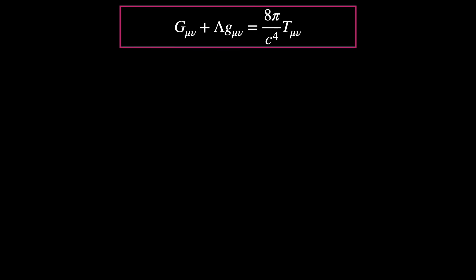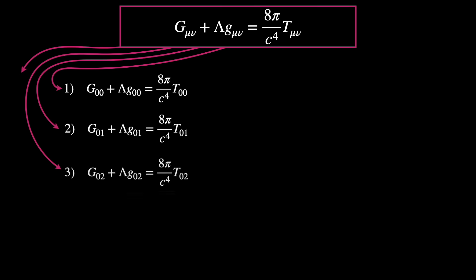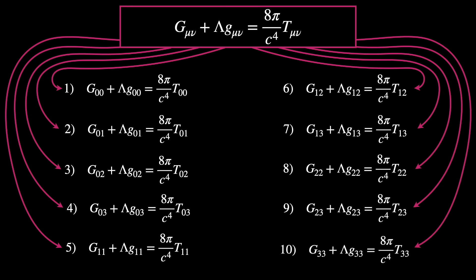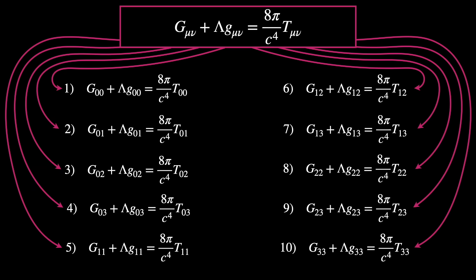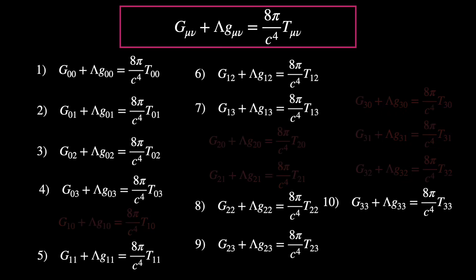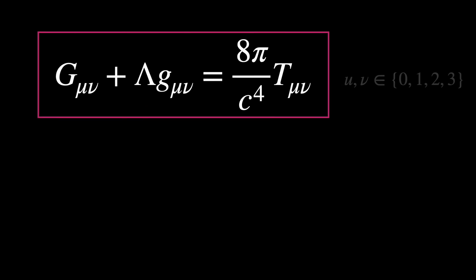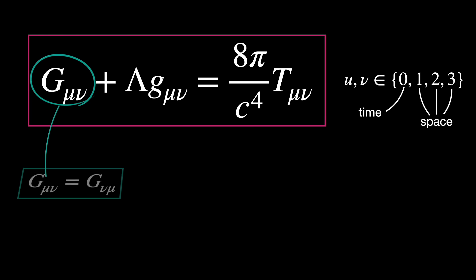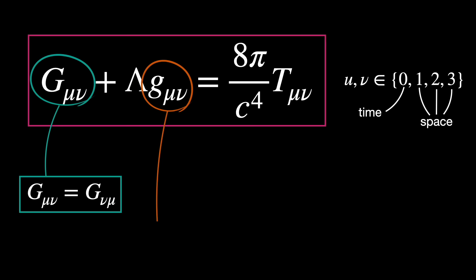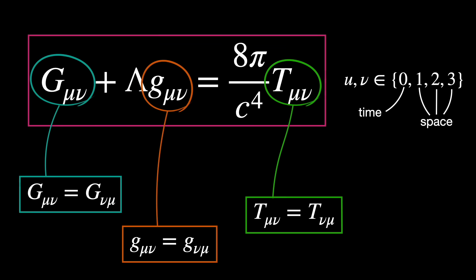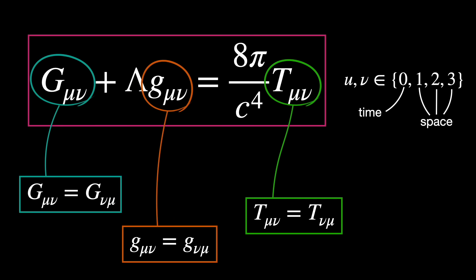Einstein's equations are 10 interlinked nonlinear partial differential equations. Actually, there should be 16 of such equations, since each side has rank-two symmetric tensors, meaning it has two indices, mu and nu, and is symmetric under exchange. But only 10 of such equations are independent, because of this symmetry.